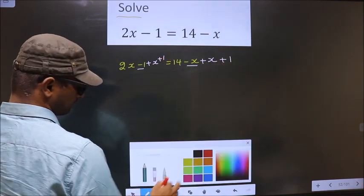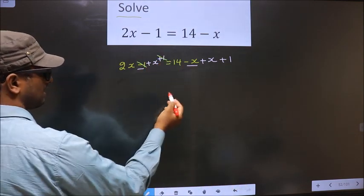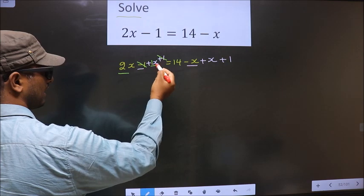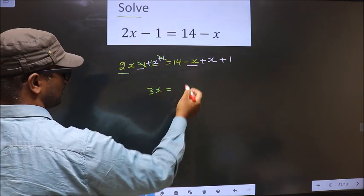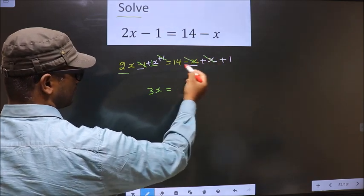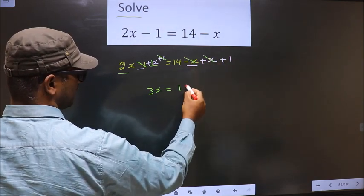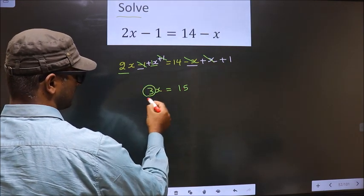So now minus 1 plus 1 cancel out. 2x plus 1x will result in 3x equal to, here minus x plus x cancel out, 14 plus 1 equals 15. Now to get x we should remove 3, so to remove 3 you divide by 3.